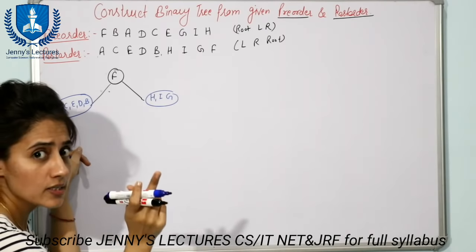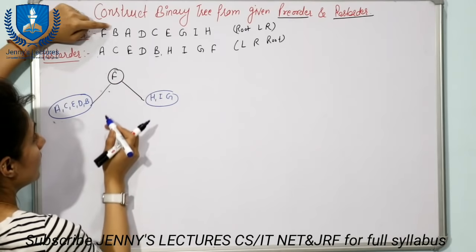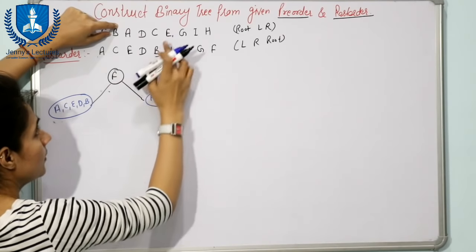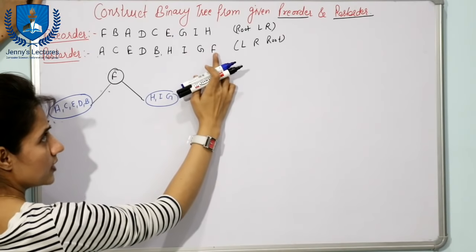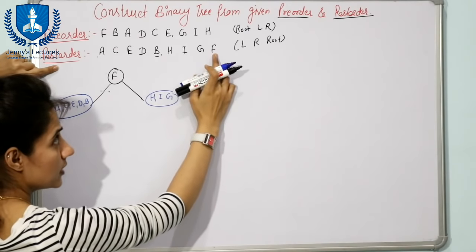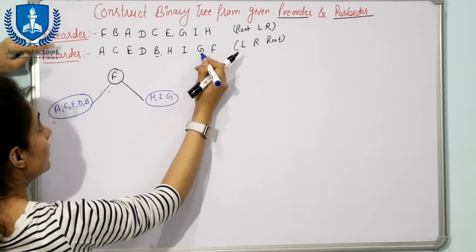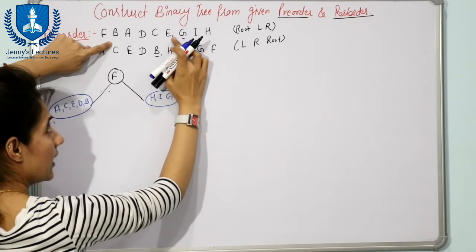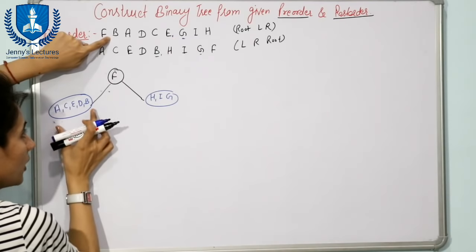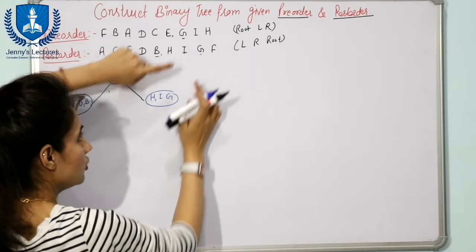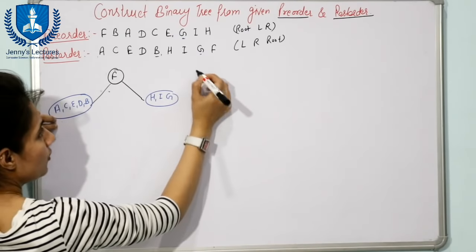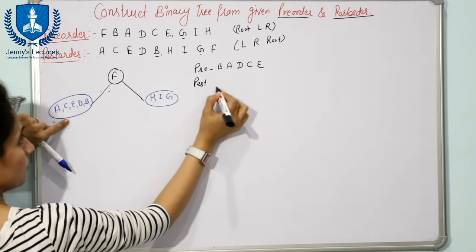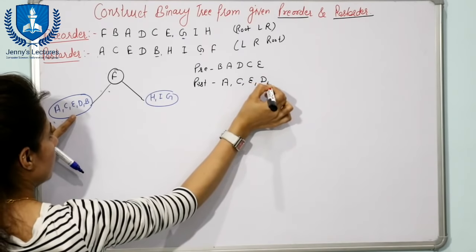For the left sub-problem, the pre-order is from B to E, and the post-order is A, C, E, D, B. To confirm why the pre-order ends at E: find the predecessor of root F in post-order, which is G. Find G in pre-order. From B up to the element before G gives the pre-order for the left subtree. The right subtree pre-order is from G to H. So: pre-order B, A, D, C, E and post-order A, C, E, D, B.